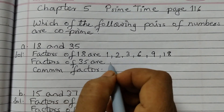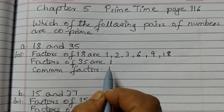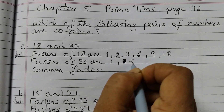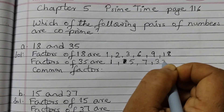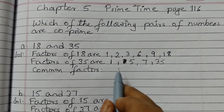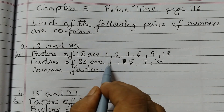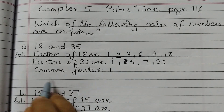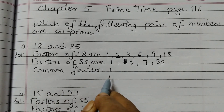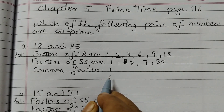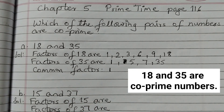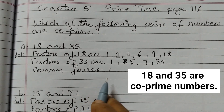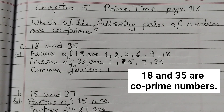Now factors of 35 are 1. 1 is a factor of every number. So 1, then 5, 7 and 35. So we have 4 factors here. Now find out the common factors. We have 1 as a common factor. Are there any more factors? 5, 7, 35? No. Since the common factor is just 1, we can say that 18 and 35 are co-prime numbers. If the common factor is only 1, then the numbers are co-prime numbers.